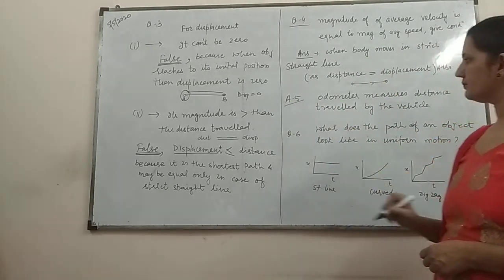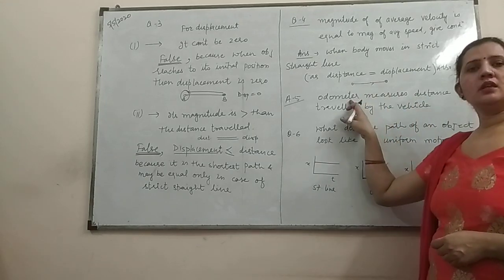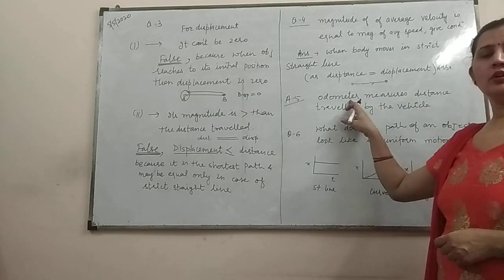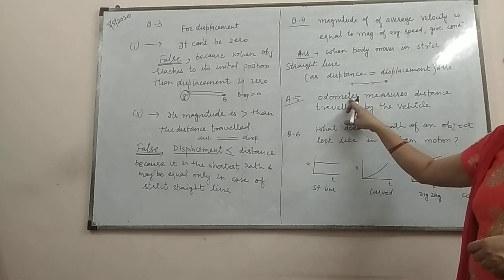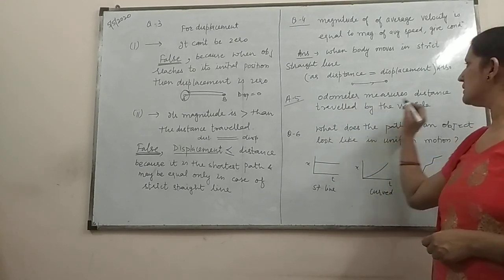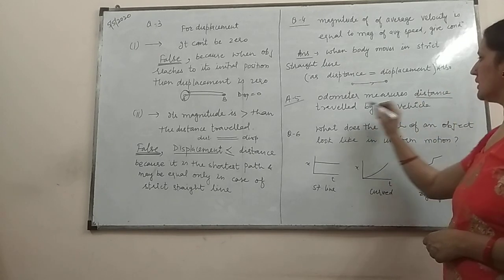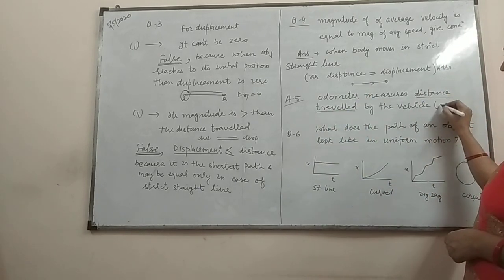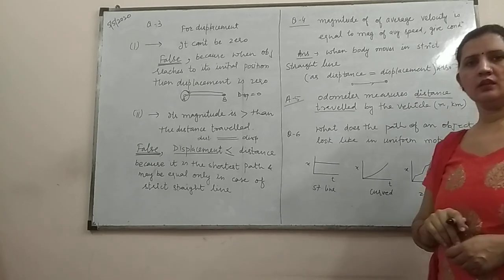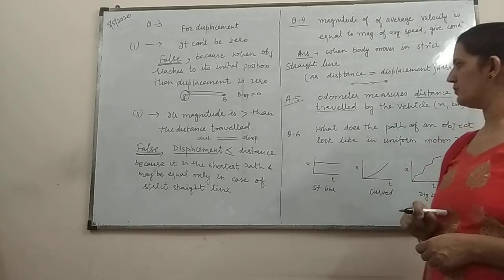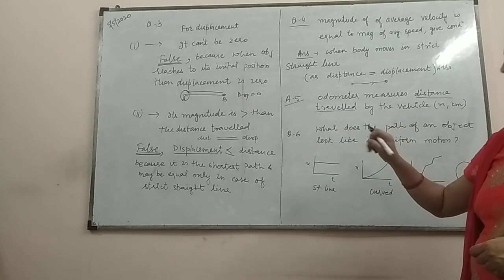Now, the next question is, which quantity is measured by the odometer? Odometer is a device which is used to measure the distance travelled by the object. This odometer have the units metre and kilometre as well. It measures the distance of the object.